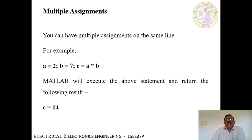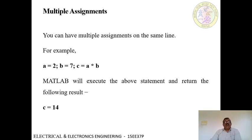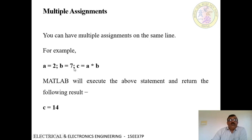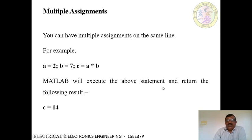How to assign multiple statements in a single line? We can have multiple assignments on a single line by using semicolons and commas. Each statement is separated by a semicolon, and all three commands are typed in a single line: a equals 2 semicolon, b equals 7 semicolon. We will not get an immediate result because after each statement we have put a semicolon — semicolon suppresses immediate results. Then c equals a into b; here there is no semicolon, so MATLAB will display the answer: c equals 14.